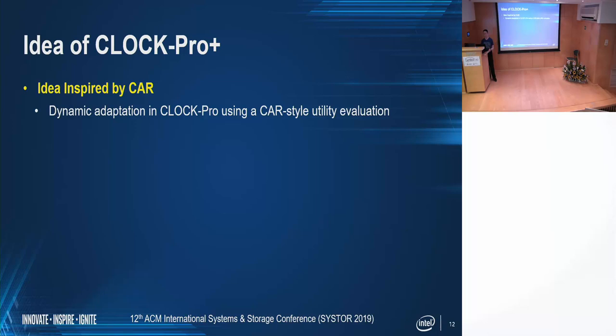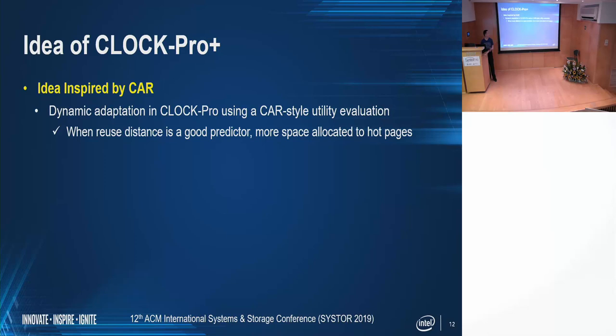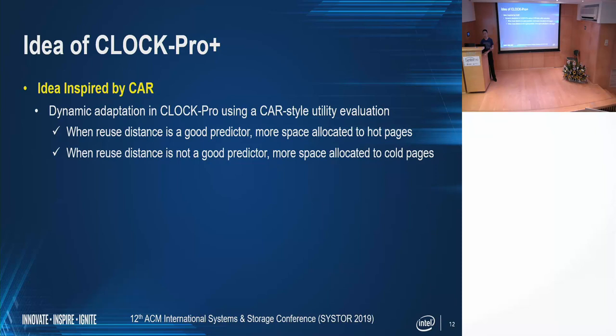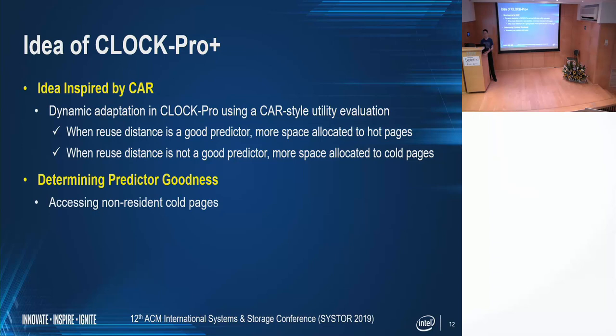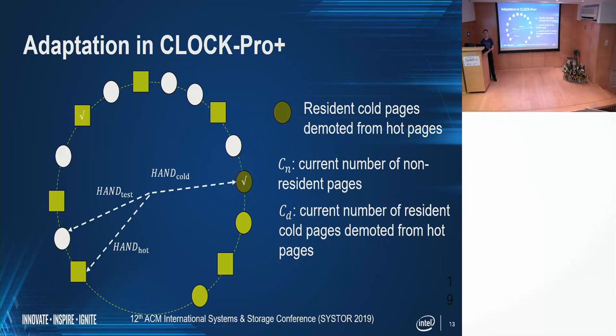Inspired by CAR, we improve the dynamic space allocation in CLOCK-Pro with a CAR-style utility evaluation. Similar to CLOCK-Pro, when reuse distance is a good predictor, we allocate more space to hot pages. When it is not a good predictor, we allocate more space to cold pages. To determine whether it is a good predictor or not, we look into two cases: the first is accessing the non-resident cold page; the other is an inappropriate demotion of the hot page — that is, a demoted page hit shortly after demotion. To do so, we attach a demotion bit to each resident cold page, and also track the current number of resident cold pages, non-resident cold pages, and demoted pages.